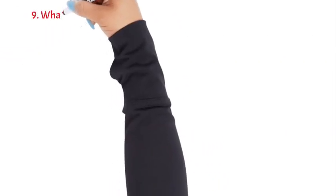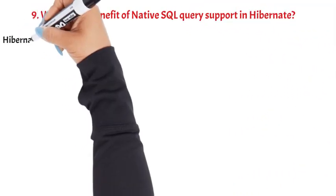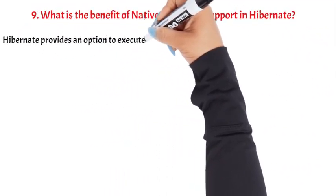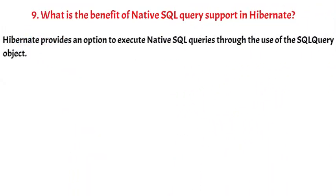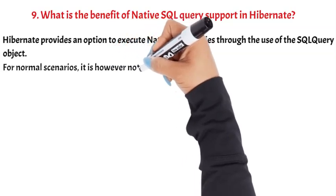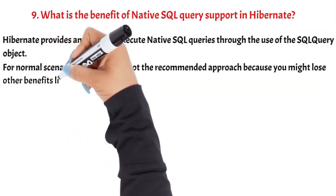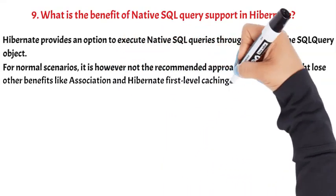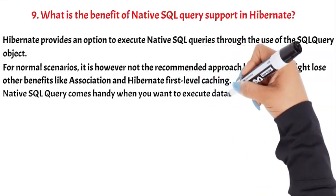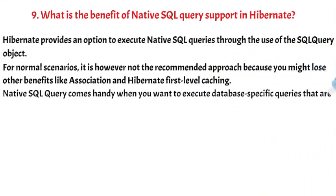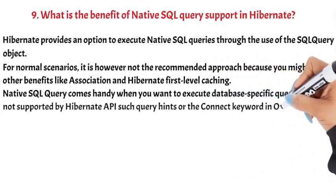Question 9: What is the benefit of native SQL query support in Hibernate? Hibernate provides an option to execute native SQL queries through the use of the SQL query object. For normal scenarios, it is not the recommended approach because you might lose other benefits like association and Hibernate first level caching. Native SQL query comes in handy when you want to execute database-specific queries not supported by the Hibernate API, such as query hints or the CONNECT keyword in Oracle database.